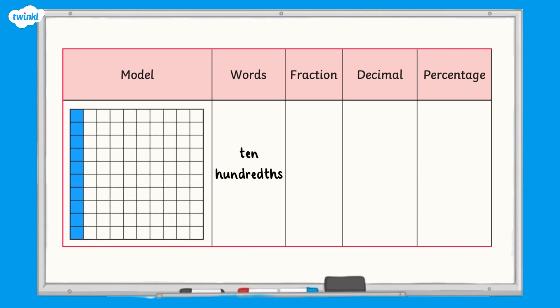This hundred square represents ten hundredths. Ten hundredths can be written as a fraction like this, and can be simplified to one tenth. Ten hundredths is equivalent to one tenth. If you would like to find out more about simplifying fractions, take a look at our video on the Twinkl website.